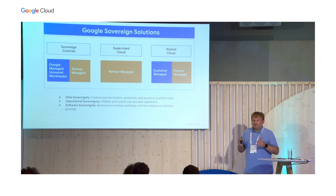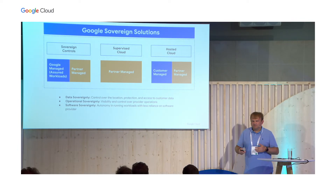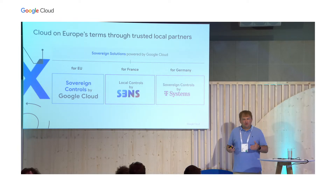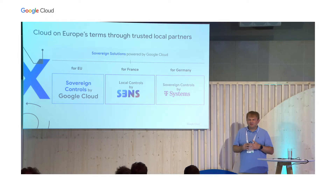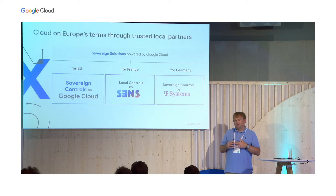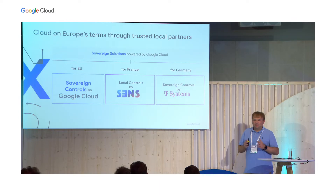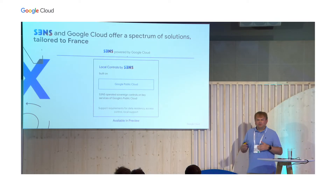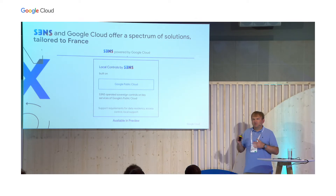For situations where there is a strong need to have less reliance on the software provider, our hosted cloud offering will support software sovereignty and allow for air-gapped and disconnected operations without provider software or support. We do this in Europe in conjunction with well-trusted partners. I talked already about T-Systems, but we also started an initiative in France — together with Thales, we founded a joint venture called S3NS to offer a cloud on Europe's terms for French customers. Partnerships in Italy and Spain were also recently announced. The offering is called Local Controls by S3NS, available in preview, and builds on Google public cloud services, supporting data residency, access control, local support, and building a foundation for sovereign workloads in France.